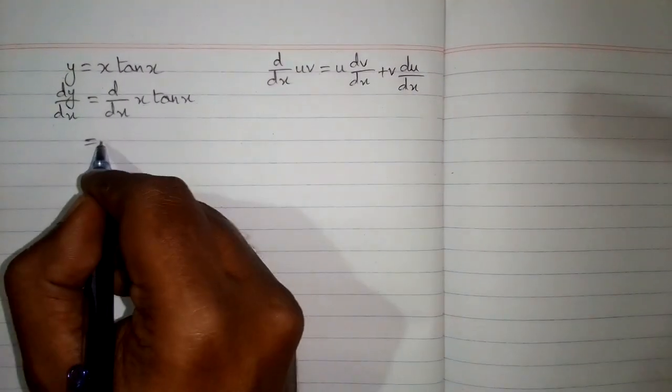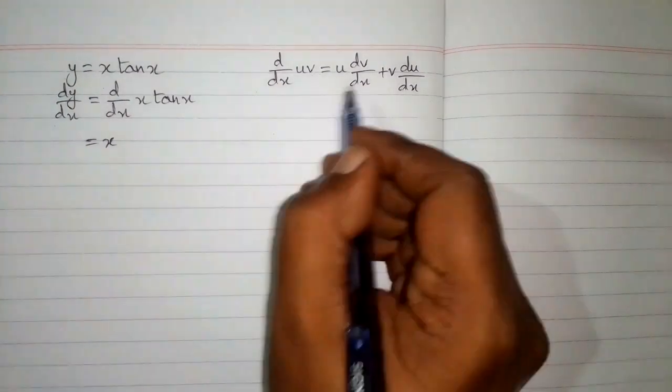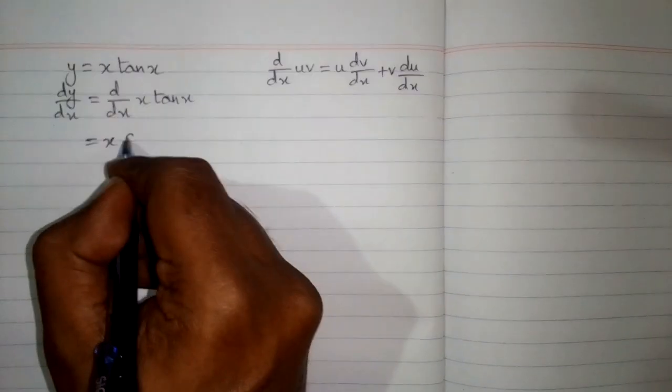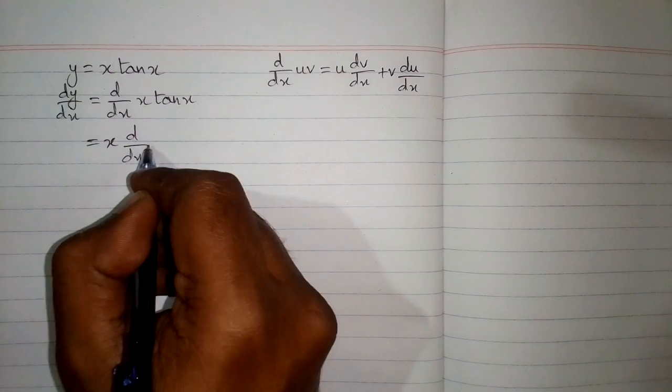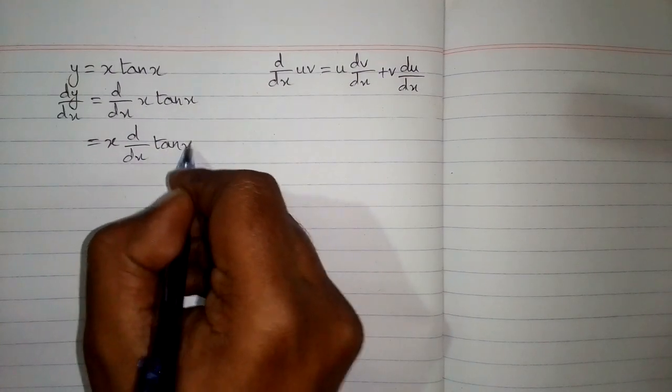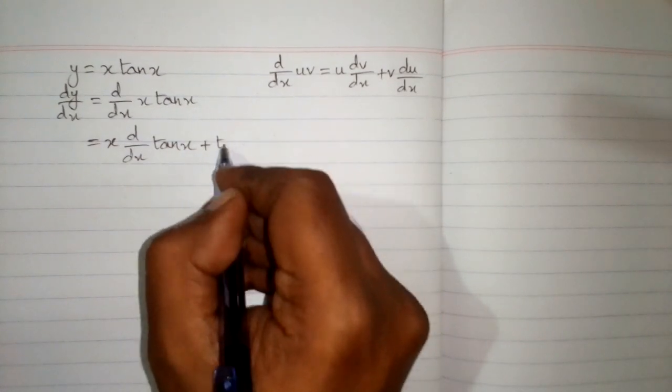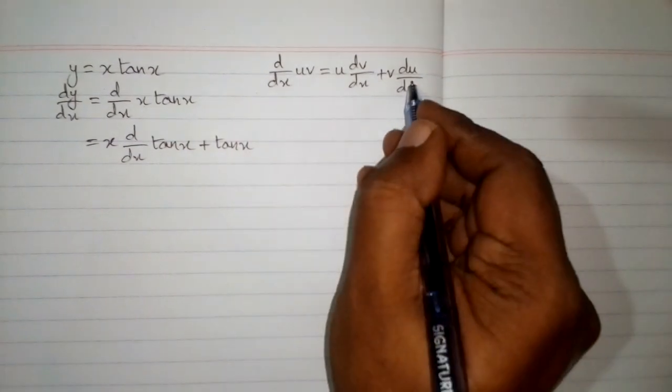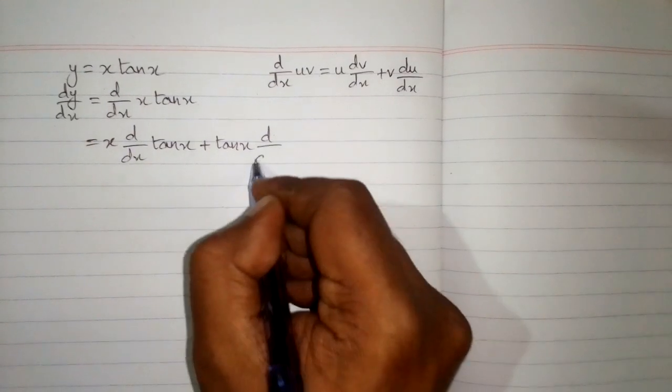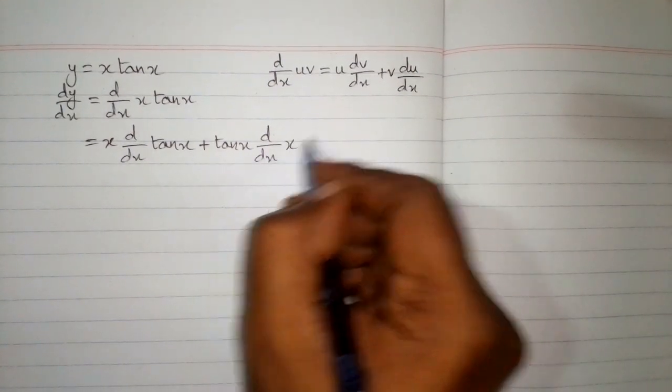First we write u, that is x, then the derivative of v, which is the derivative of tangent of x. Then plus v, which is tangent of x, then the derivative of u, where u is x.